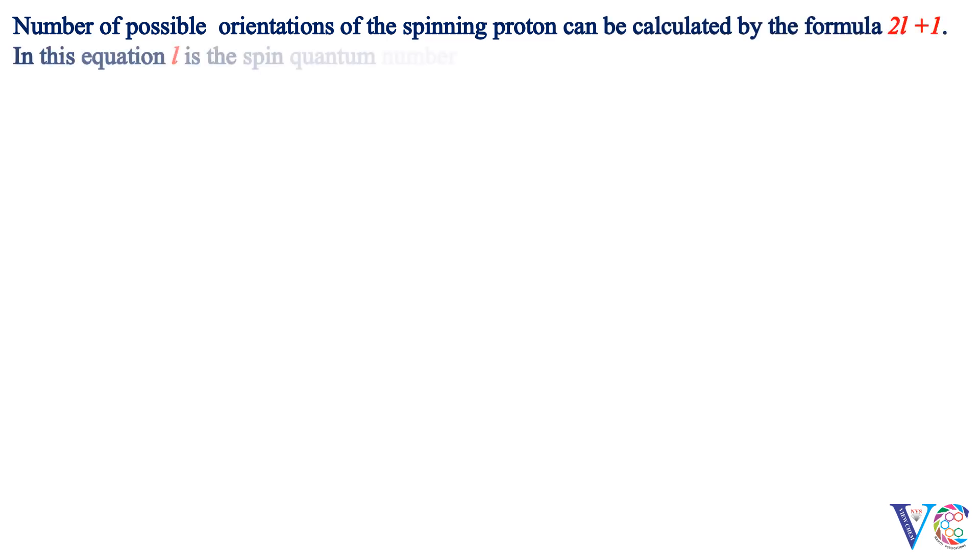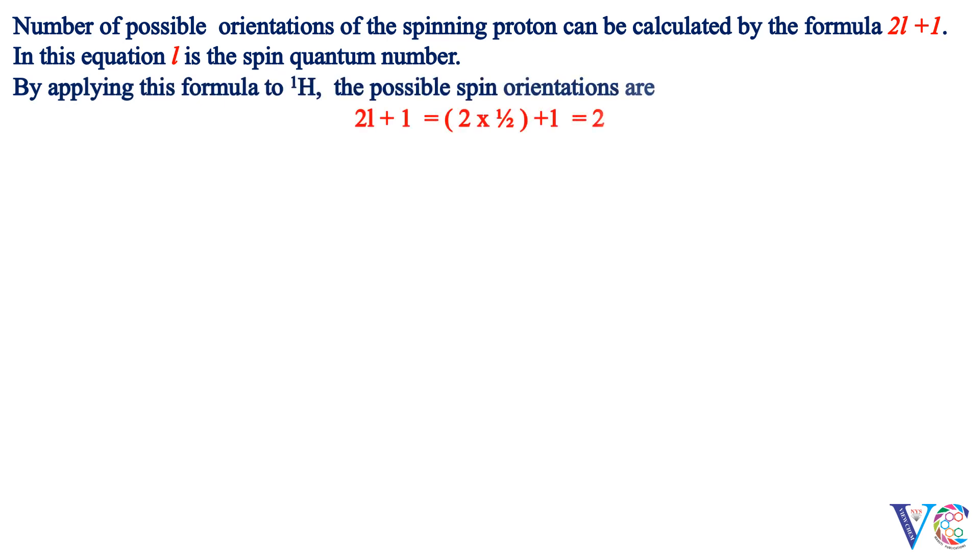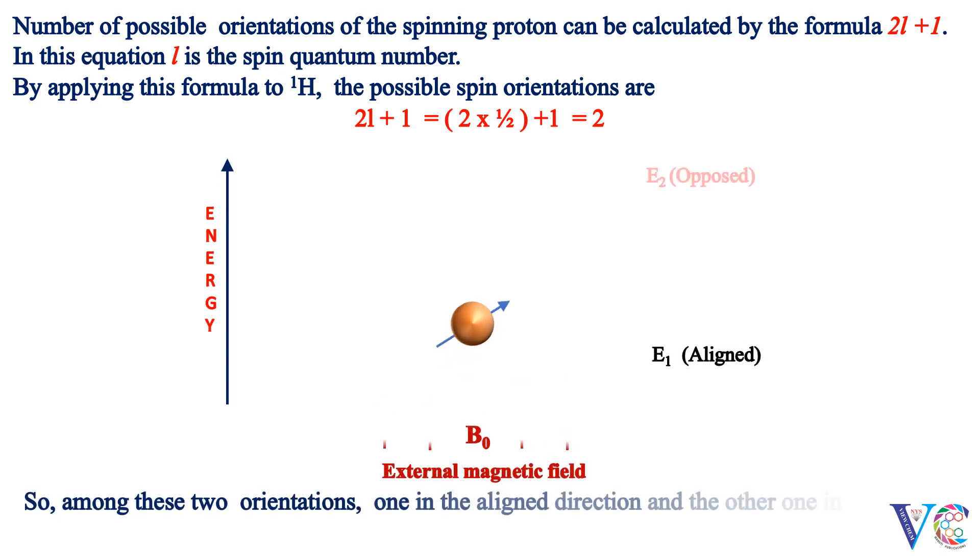Number of possible orientations of the spinning proton can be calculated by the formula 2I plus 1. In this equation, I is the spin quantum number. By applying this formula to 1H, the possible spin orientations are 2. So among these two orientations, one in the aligned direction and the other one in the opposed direction with the external magnetic field.